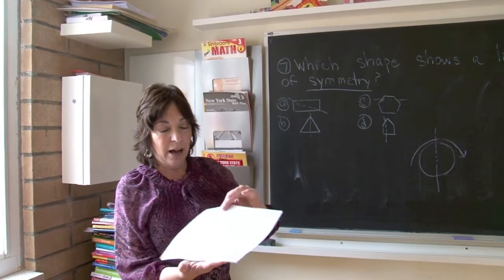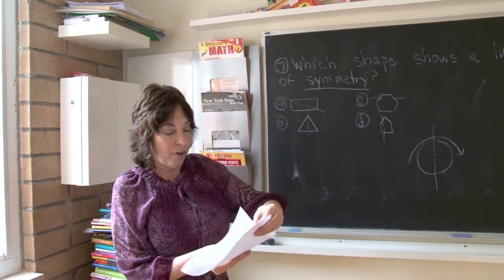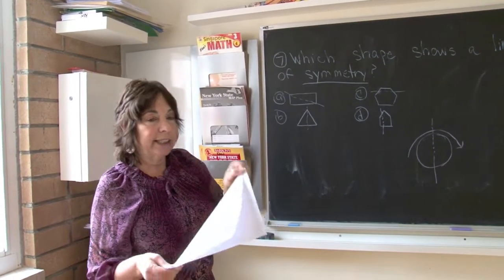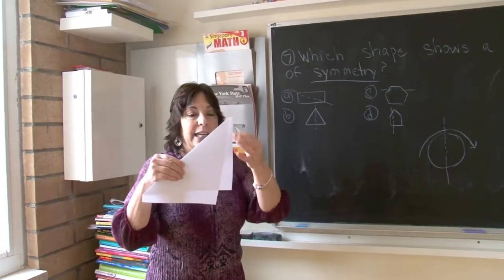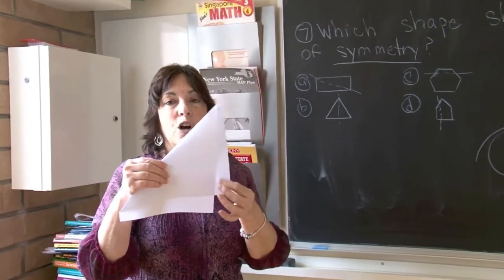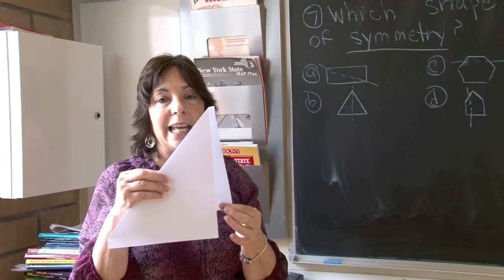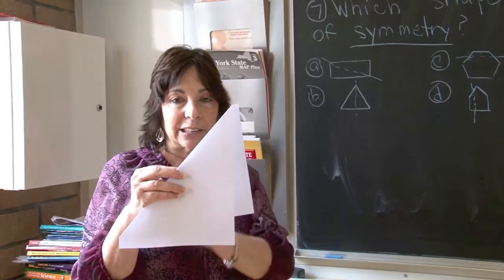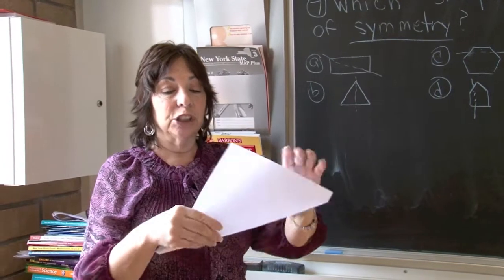Here is a rectangle. I drew a diagonal line. If I fold it on the diagonal, it is not exact. There is a piece left over. A rectangle does not have a line of symmetry across the diagonal line.